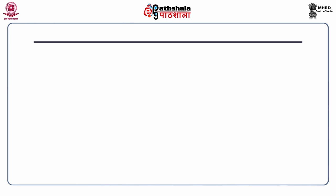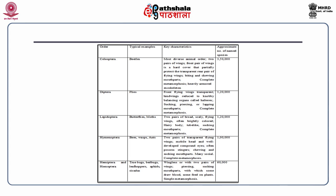Among the class Insecta, the most important orders include Order Coleoptera — the most diverse animal order, with two pairs of wings; the front pair is a hard cover that partially protects the transparent rear flying wings, with biting and chewing mouthparts, complete metamorphosis, and a heavily armed exoskeleton. Order Diptera has front flying wings and transparent hind wings reduced to knobby balancing organs called halteres, with sucking, piercing or lapping mouthparts and complete metamorphosis.